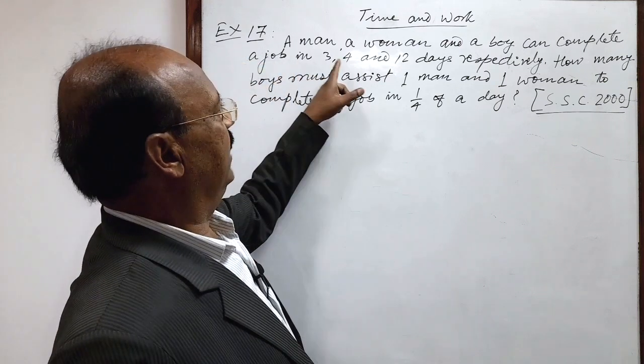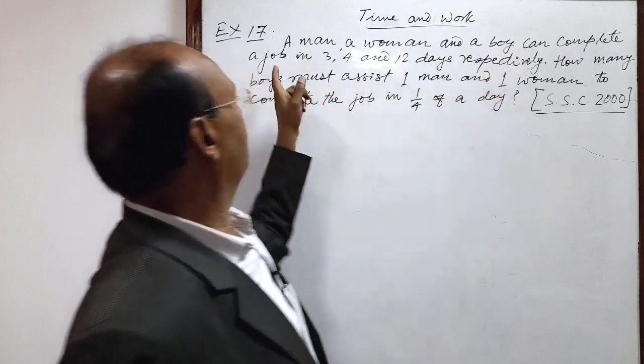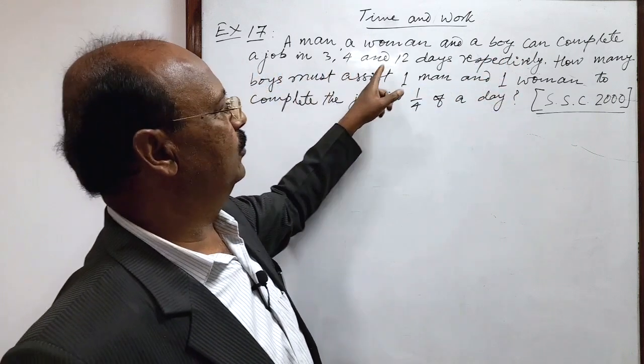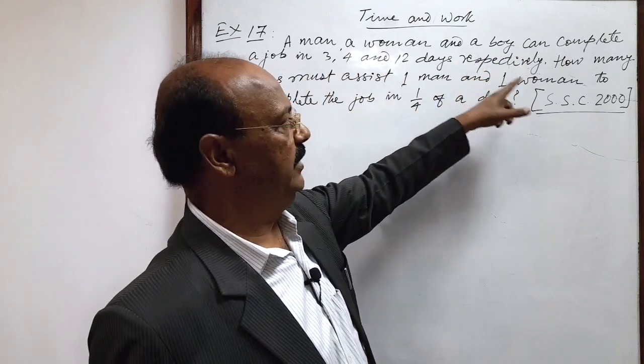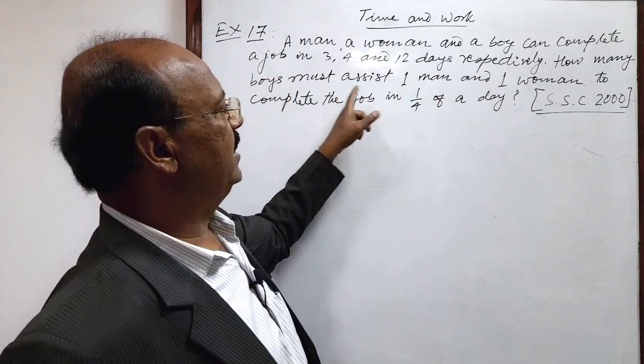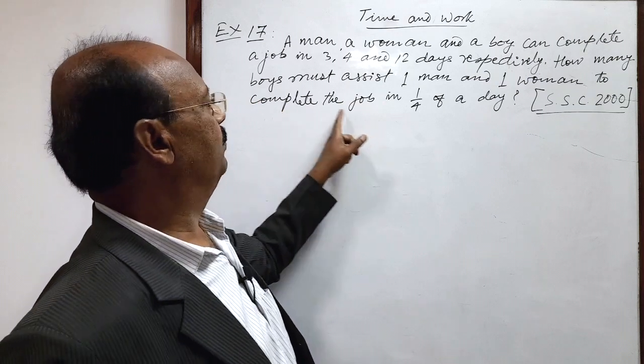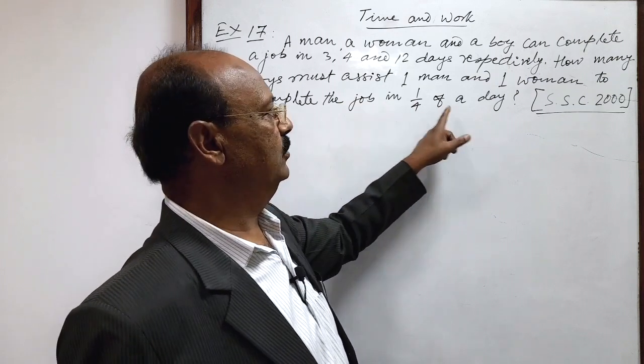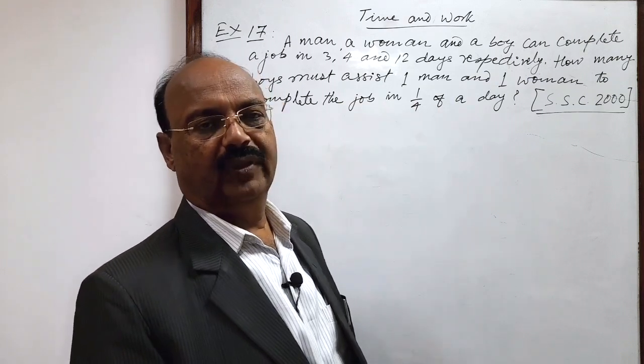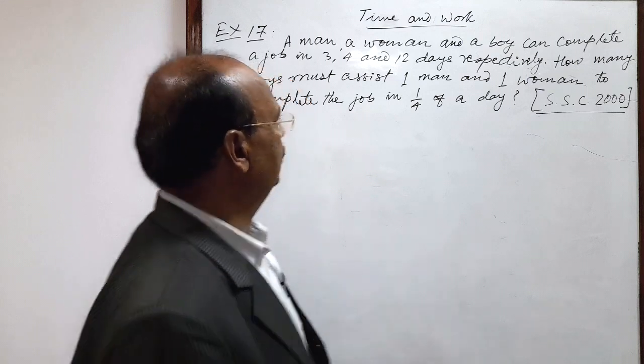Here question is: a man, a woman and a boy can complete a job in 3, 4 and 12 days respectively. How many boys must assist one man and one woman to complete the job in 1 by 4 of a day? Question is very clear. So let us see the solution.